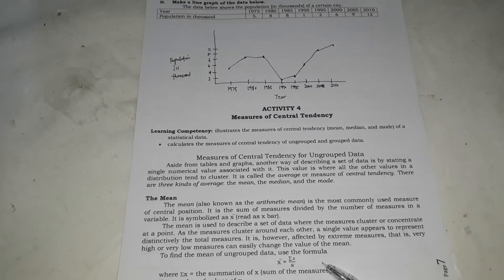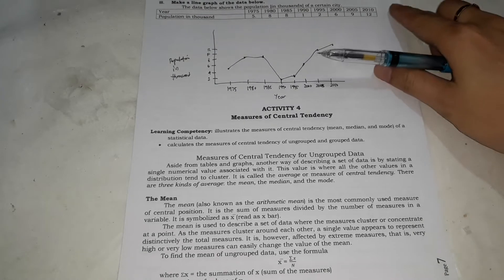So for the formula, it's ganito: x bar is equal to summation of x over n. Or in other terms, i-add mo lang yung mga result, tapos i-divide mo kung ilan sila. Just like the average for grades, so first quarter, second quarter, third quarter, fourth quarter, yung grade mo, para makuha yung mean, i-plus mo sila lahat, tapos i-divide mo by four kasi apat na quarter. So that's for the mean.